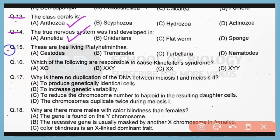Question 15. These are free-living platyhelminthes. Correct answer is option C. Class Turbellaria contains free-living platyhelminthes.